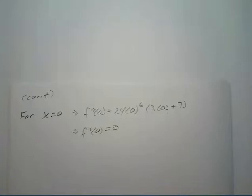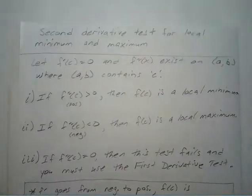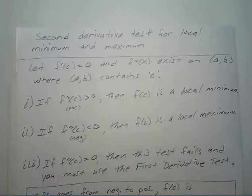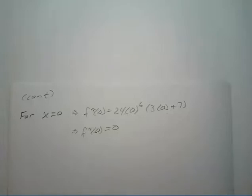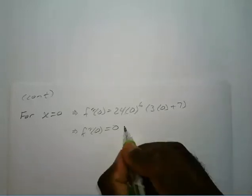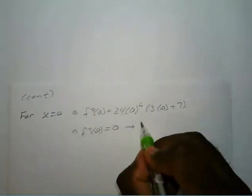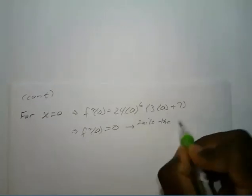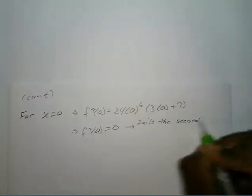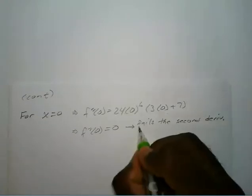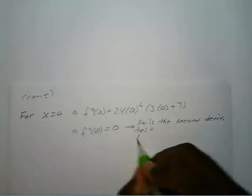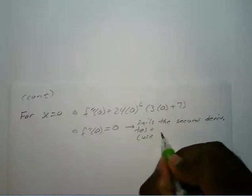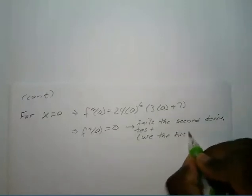What does that tell us? When the second derivative equals zero, it fails the test and we must use the first derivative test — we have to go through those three steps. So: fails the second derivative test, and use the first derivative test.